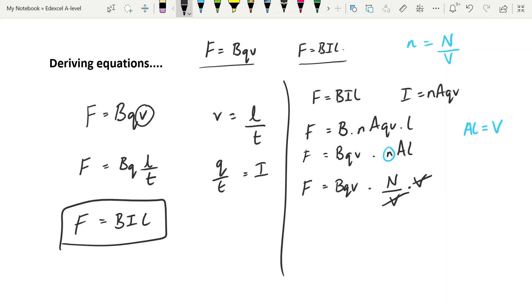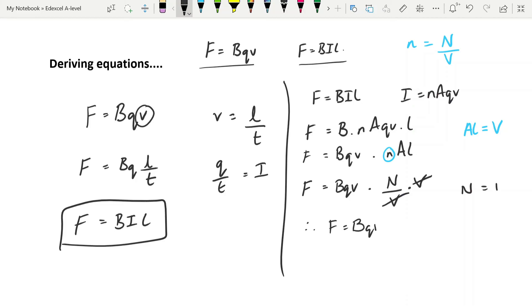Now what about the n? Well, here we're just talking about a single particle. So our n becomes 1, and therefore we are left with f is equal to bqv when you're talking about a single particle.